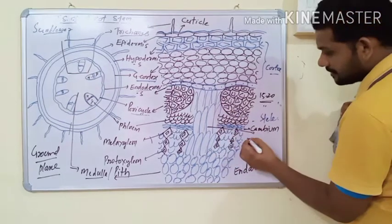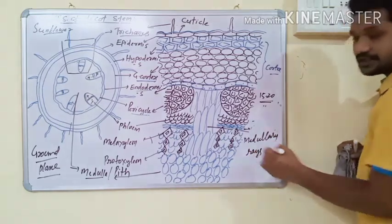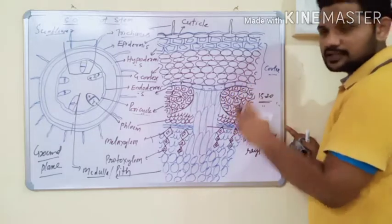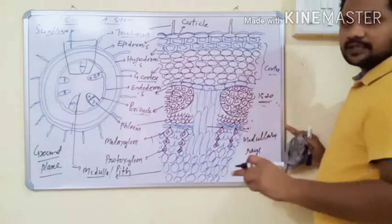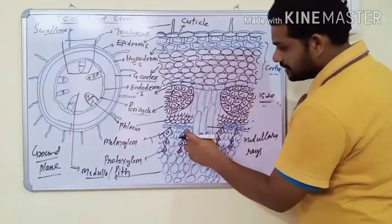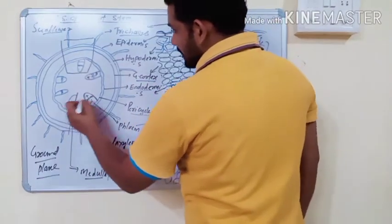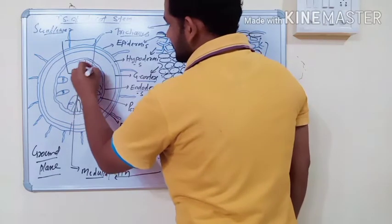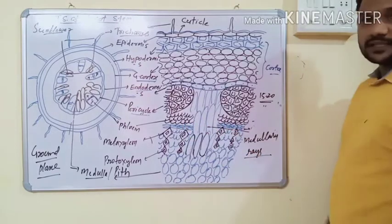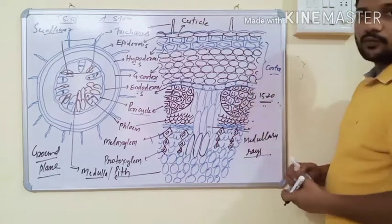One more important structure in dicot stem is medullary rays. Medullary rays are present only in dicot stem and are absent in roots, monocot stem, and leaves. Medullary rays are elongated parenchymatous cells present between adjacent vascular bundles. They connect the stem with the cortex region for lateral conduction of water, minerals, and organic materials.